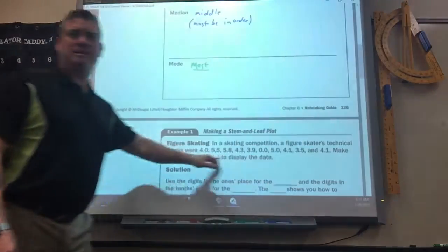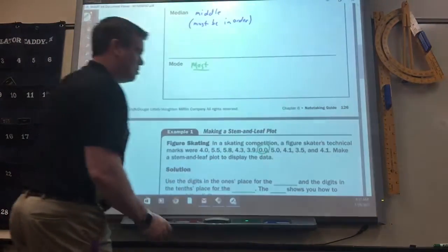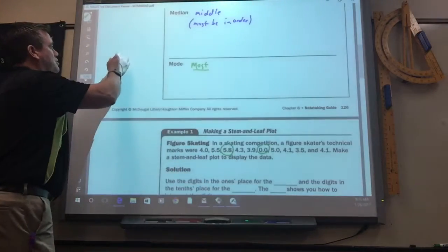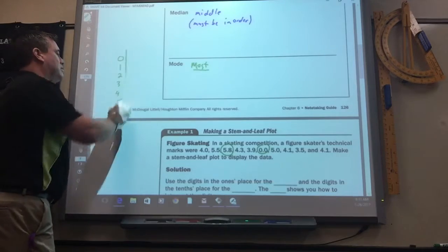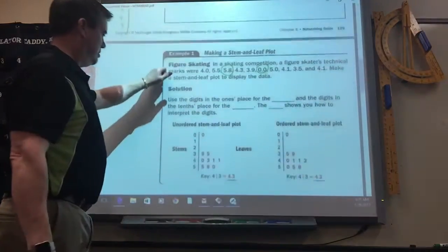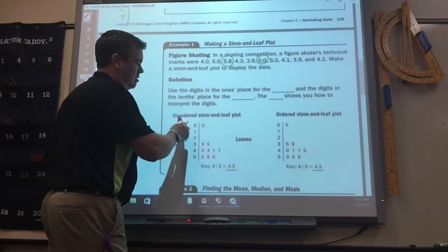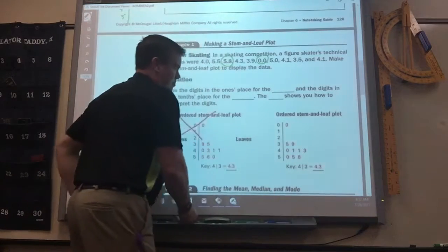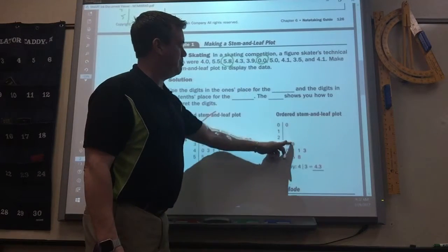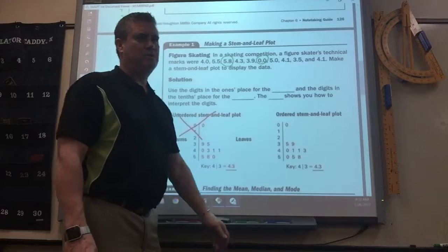Decimals are common to use in a stem and leaf plot. The smallest decimal is 0.0. The biggest is 5.8. So you would start, you'd go 0, 1, 2, 3, 4, 5. And then you would just fill them in. I think they did it for us here. Yeah. Here they put them unordered, which doesn't make any sense because then it doesn't help you at all. Here's the order. 0.0 and then it skips up to 3.5 and so on. And then they put the key in here. They chose 4, 3, equals 4.3.